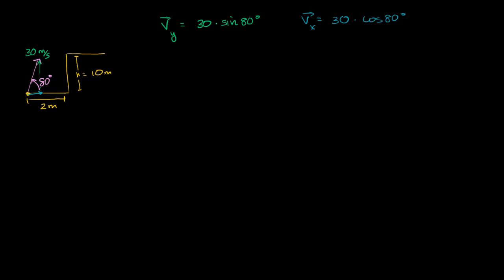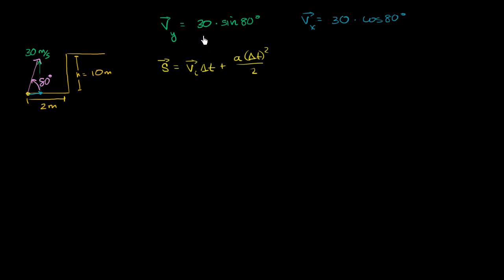How much time do we spend in the air? In the last few videos, we saw that we can look at displacement. If we want to figure out time in the air, we know that displacement equals the initial velocity times change in time, plus acceleration times change in time squared over 2. In our situation, we know what our initial velocity is — we're talking about the vertical direction. The vertical component determines the time in the air, because at some point when it hits the ground, it stops traveling.